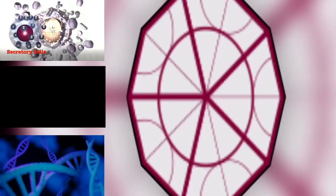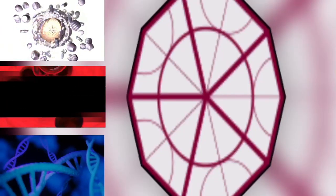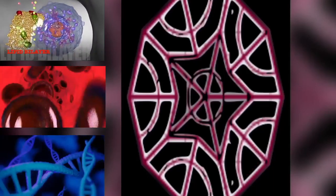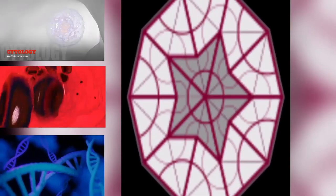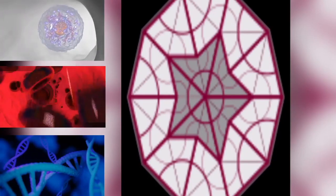Anaphase: kinetochore microtubules pull the two sets of chromosomes apart, and lengthening polar microtubules push the halves of the dividing cell further apart, while chromosomes are condensed maximally.